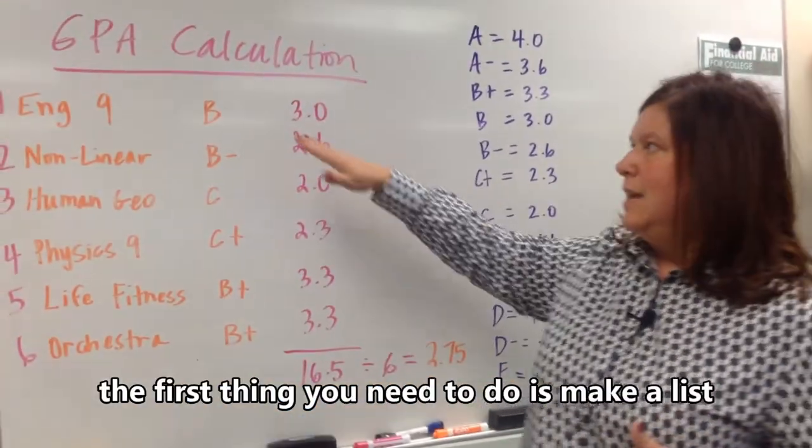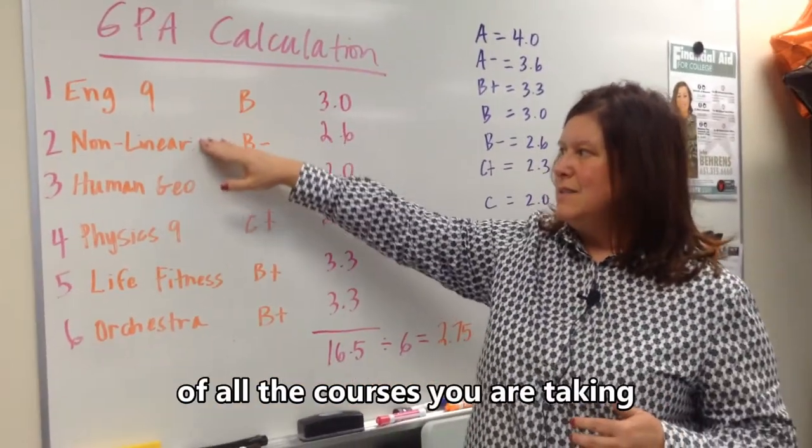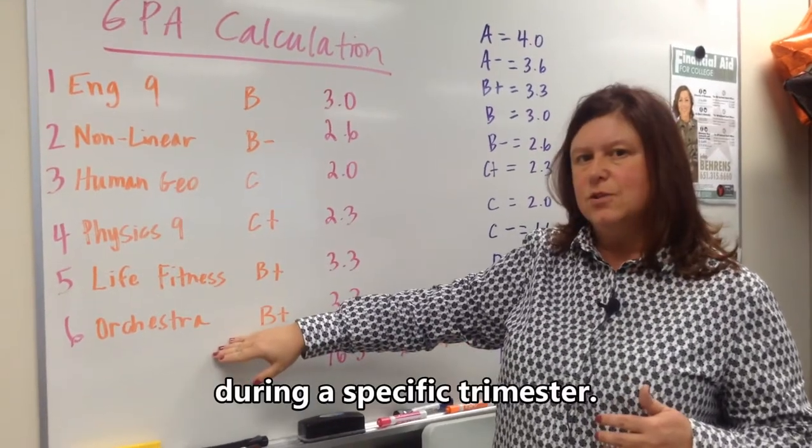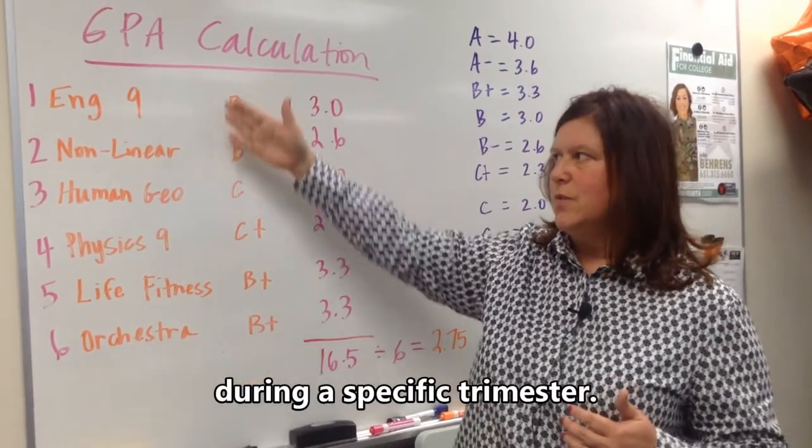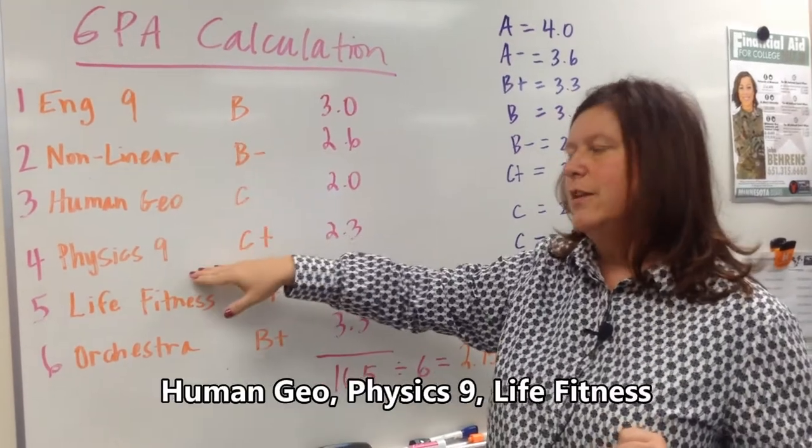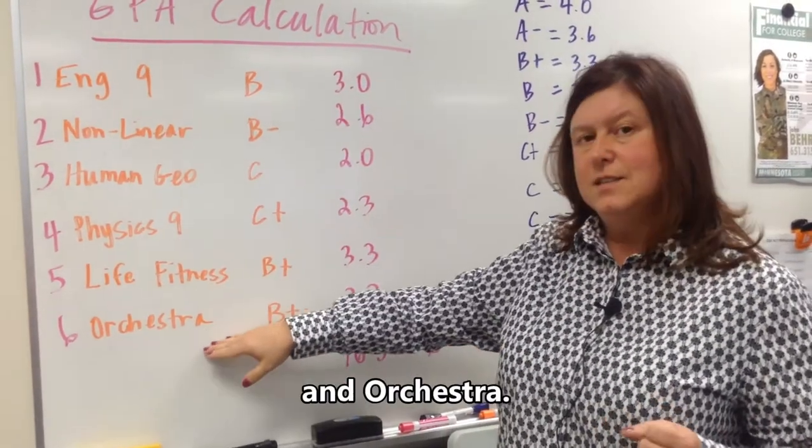So when you're looking at your GPA, the first thing you need to do is make a list of all of the courses that you're taking during a specific trimester. So for this student: English 9, Non-Linear, Human Geography, Physics 9, Life Fitness, and Orchestra.